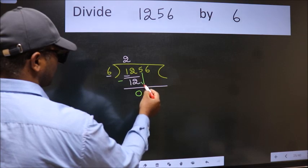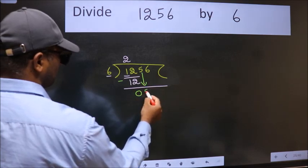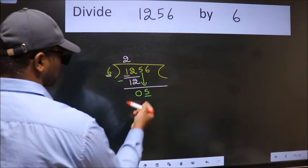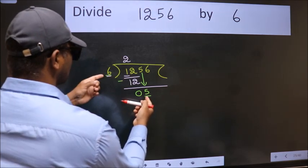After this, bring down the beside number. So, 5 down. Now here we have 5 and here 6. 5 is smaller than 6.